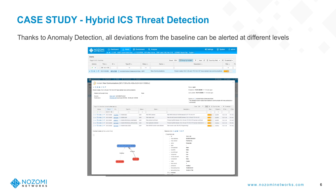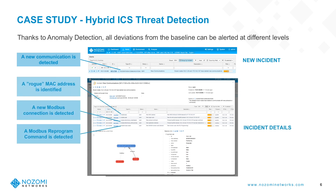What does this look like from a use case perspective? Thanks to anomaly detection, all deviations from a baseline can be alerted at different levels. A new incident is identified with context — a new communication is detected with an associated risk rating. You're able to quickly open up those incident details and draw even more context. In this case, a rogue MAC address is identified, a new Modbus connection is detected, and a Modbus reprogram command is detected. A PCAP, or packet capture, is taken prior to and following the event for post-mortem, forensic analysis, or reporting needs.